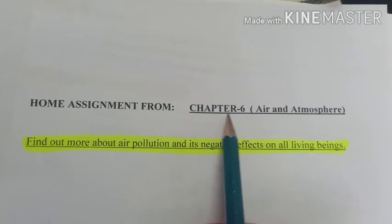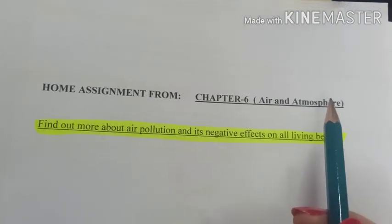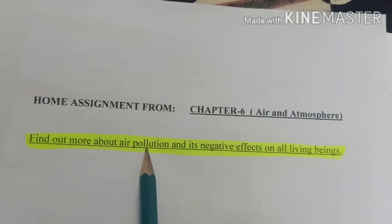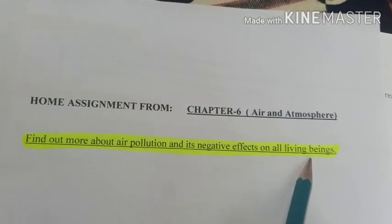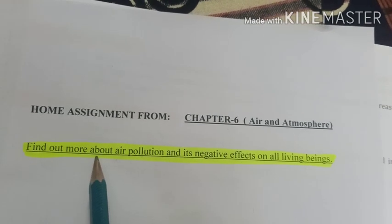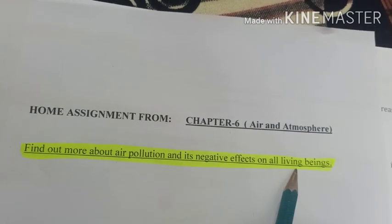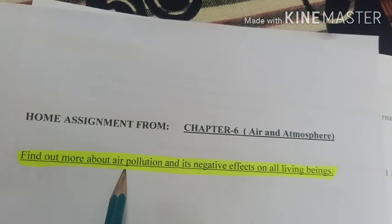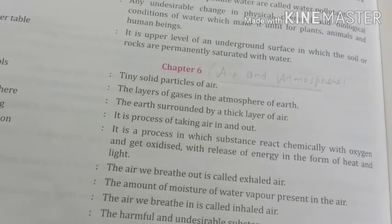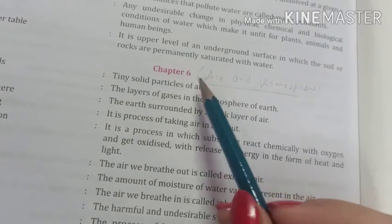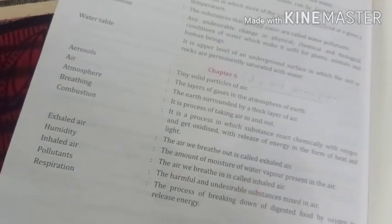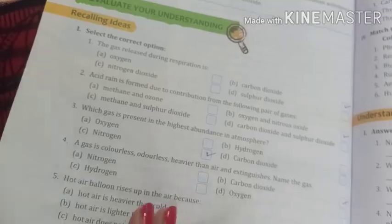Write on home assignment from chapter number 6, air and atmosphere: find out more about air pollution and its negative effects on all living beings. Find out all the causes of air pollution and their negative effects on living beings in your surroundings, and write all these points in your notebook. Our sixth chapter for the first term, air and atmosphere, is now completed. Learn all the keywords given on page 118 of this chapter and revise the chapter thoroughly. Next week, I will collect your test.